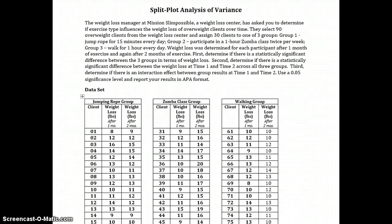Weight loss was determined for each participant after one month of exercise and again after two months. First, determine if there is a statistically significant difference between the three groups in terms of weight loss. Second, determine if there is a statistically significant difference between weight loss at time one and time two across all three groups. Third, determine if there is an interaction effect between group results at time one and time two. Use a .05 significance level and report your results in APA format.